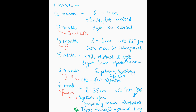Revision: One month — nothing. Two months — length 4 cm, hands and feet webbed. Three months — levator palpebrae not functioning, eyes closed. Four months — gender recognized, length 16 cm, weight 120 grams. Five months — nails distinct and soft, light hairs appear. Six months — eyebrows and eyelashes appear, subcutaneous fat deposits present.